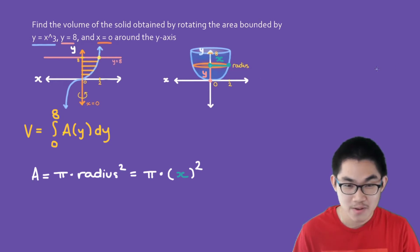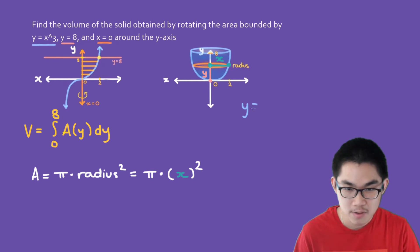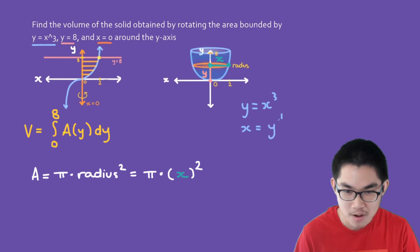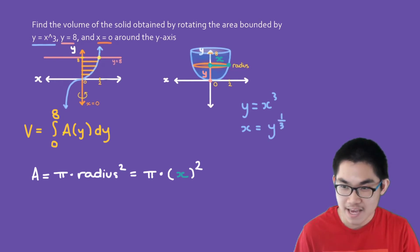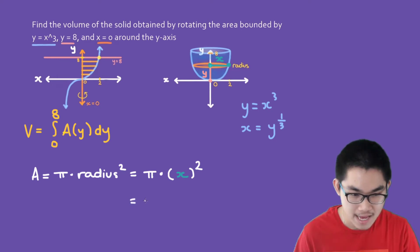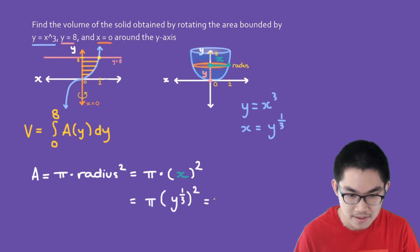We need to rewrite this in terms of y because we're integrating with respect to y. Since y equals x cubed, we get x equals y to the power of 1/3. So the area becomes pi times y to the power of 1/3 squared, which simplifies to pi times y to the power of 2/3.